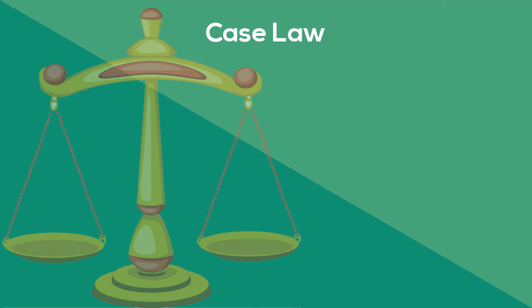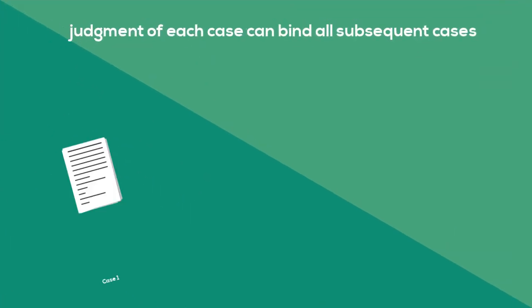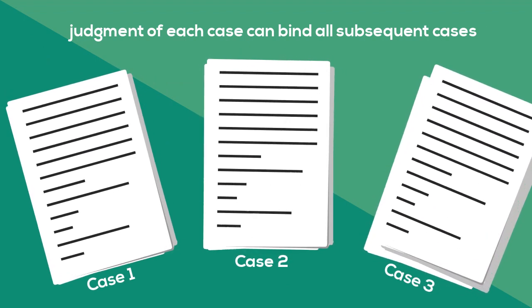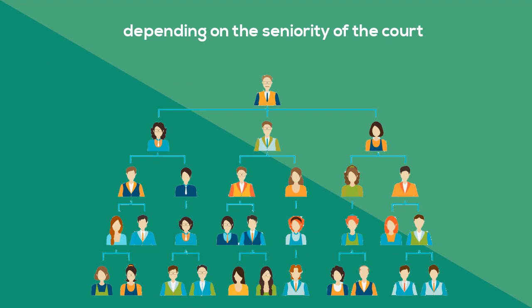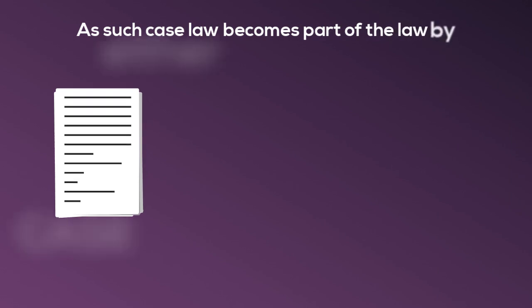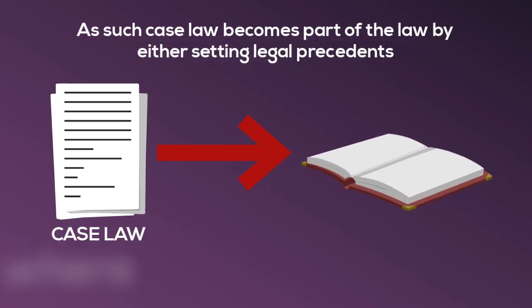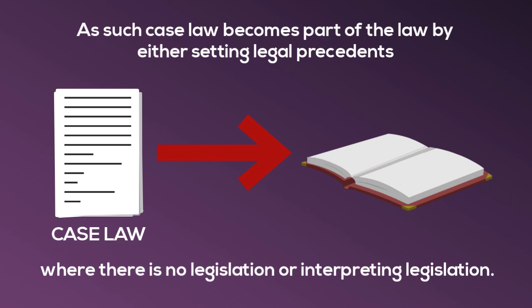Case law constantly changes how law is interpreted. Judgements and case law are particularly important as the doctrine of precedent applies. This means that the judgement of each case can bind all subsequent cases depending on the seniority of the court. The court system has a hierarchy of structure. As such, case law becomes part of the law by either setting legal precedents where there is no other legislation, or by interpreting current legislation.